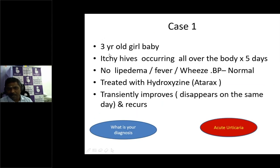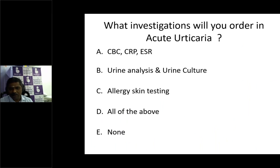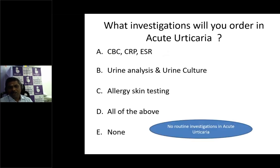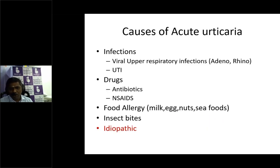Coming back to the case: a three-year-old with rashes lasting five days, no angioedema, duration less than six weeks - so it is acute urticaria. What investigations should we order? Blood counts, CRP, ESR, urine analysis, allergy skin testing? The answer is none of the above. Acute urticaria doesn't require any investigations at all, because it is usually caused by viral infections, drugs, foods like seafood, insect bites, or is idiopathic.